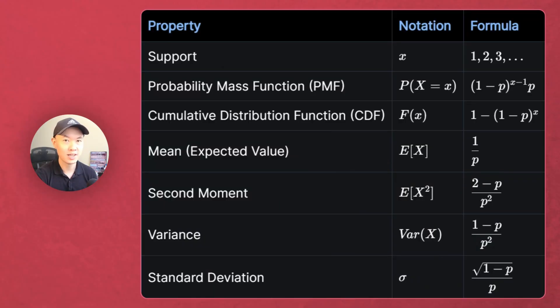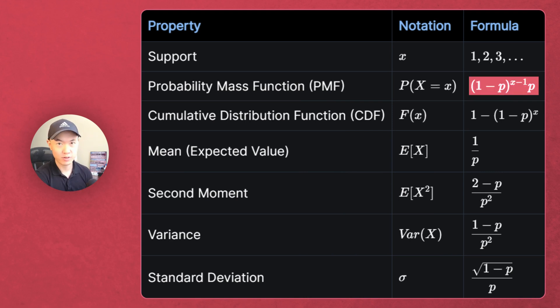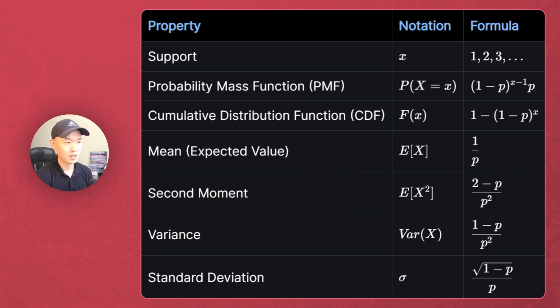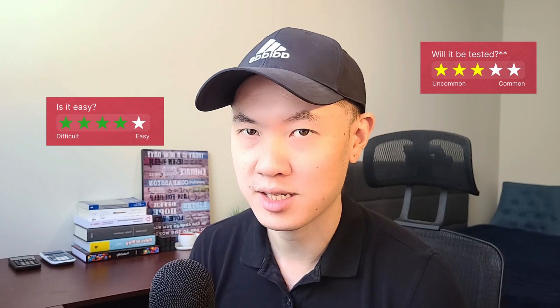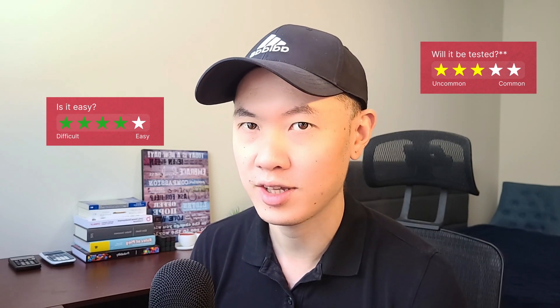With the geometric distribution, you're failing x minus 1 times until finally you get 1 success, so the PMF is 1 minus p raised to the x minus 1 times p. The expected value is 1 over p, the variance is 1 minus p divided by p squared, and the CDF is 1 minus quantity 1 minus p raised to the x. Is it easy? Similar to the binomial, this one gets a 4 out of 5 — it's a relatively straightforward distribution. Will it be tested? This one's straight down the middle with a 3 out of 5. There aren't too many SOA sample questions on it, but you definitely don't want to rule this one out.